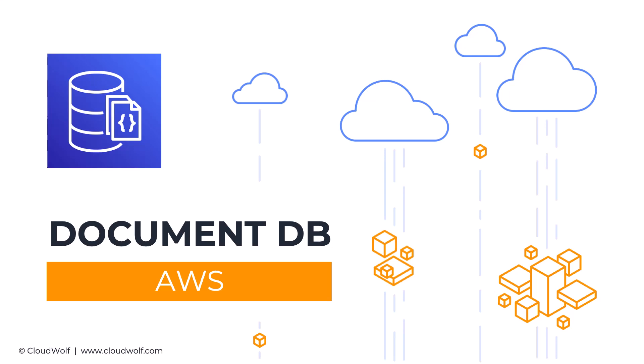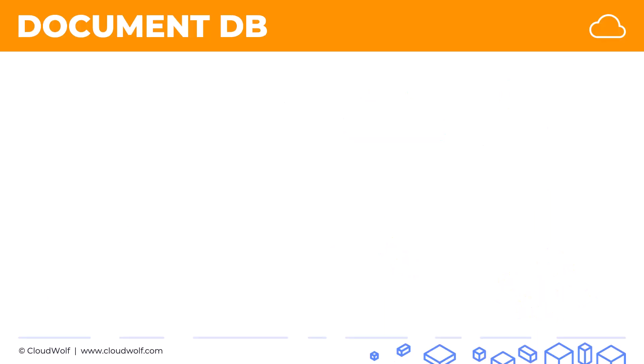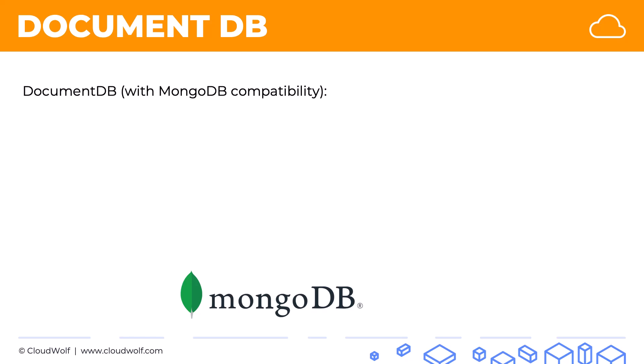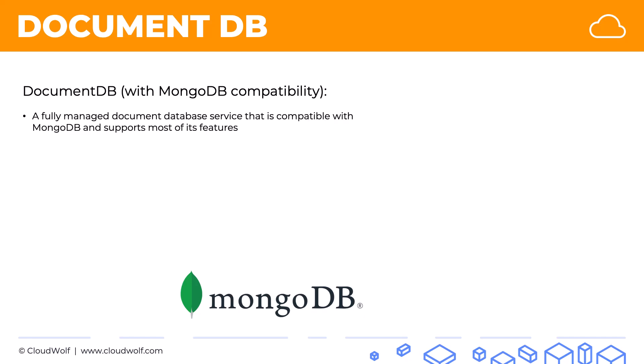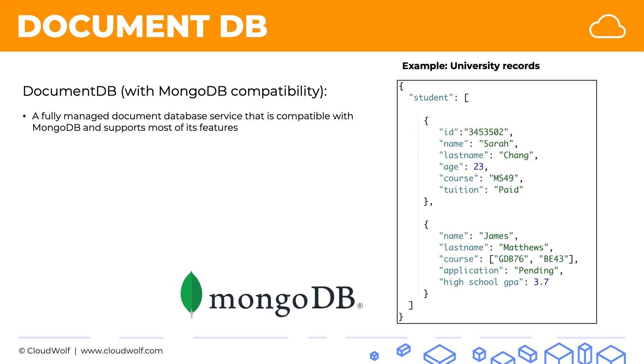Hello, welcome back. Today we're going to have a quick look at DocumentDB and we'll also see some JSON document storage in action. DocumentDB is Amazon's version of MongoDB, which is a popular document-oriented database, and even the official title on the Amazon page of DocumentDB includes in brackets 'with MongoDB compatibility.' This is a fully managed document database service that is compatible with MongoDB and supports most of its features. Here's an example of a file that would be stored in DocumentDB.